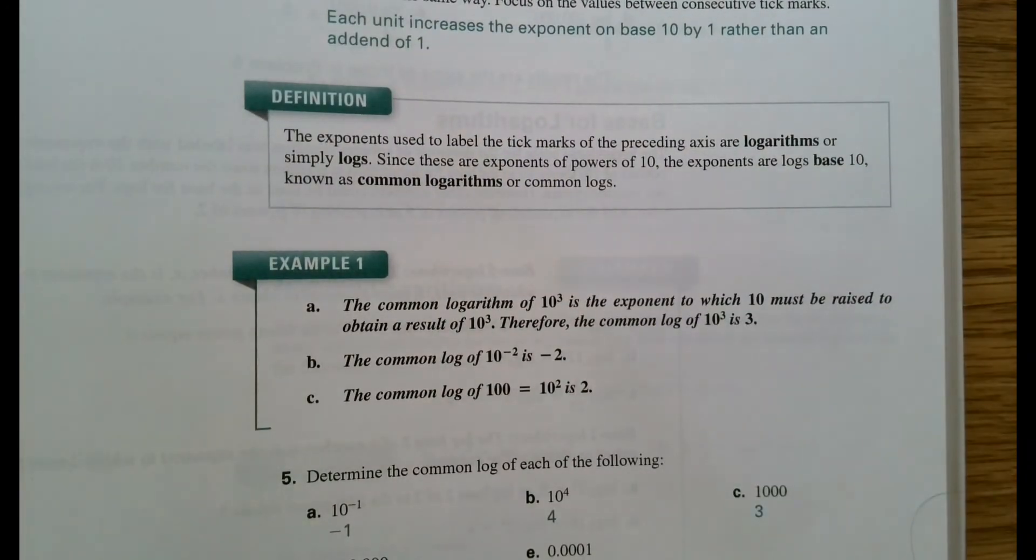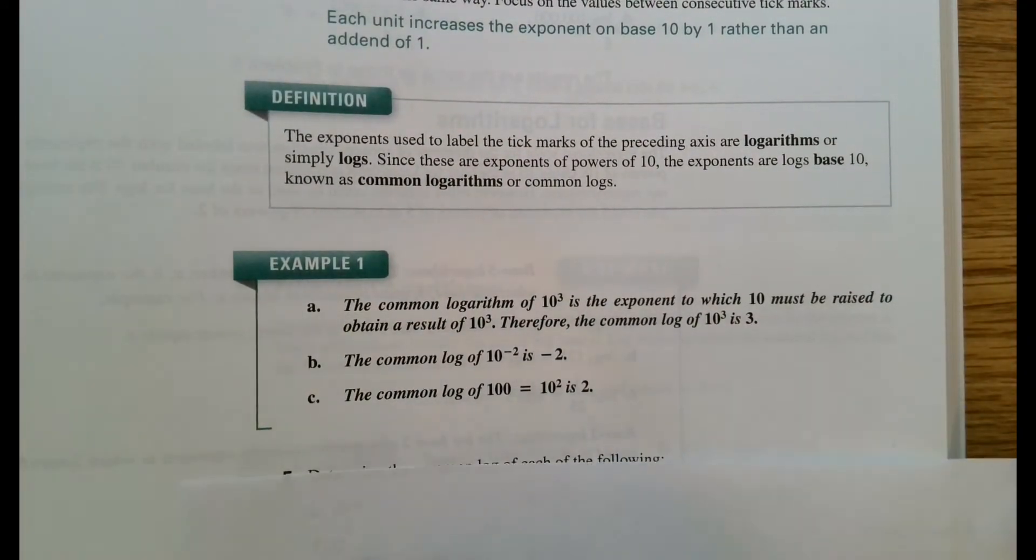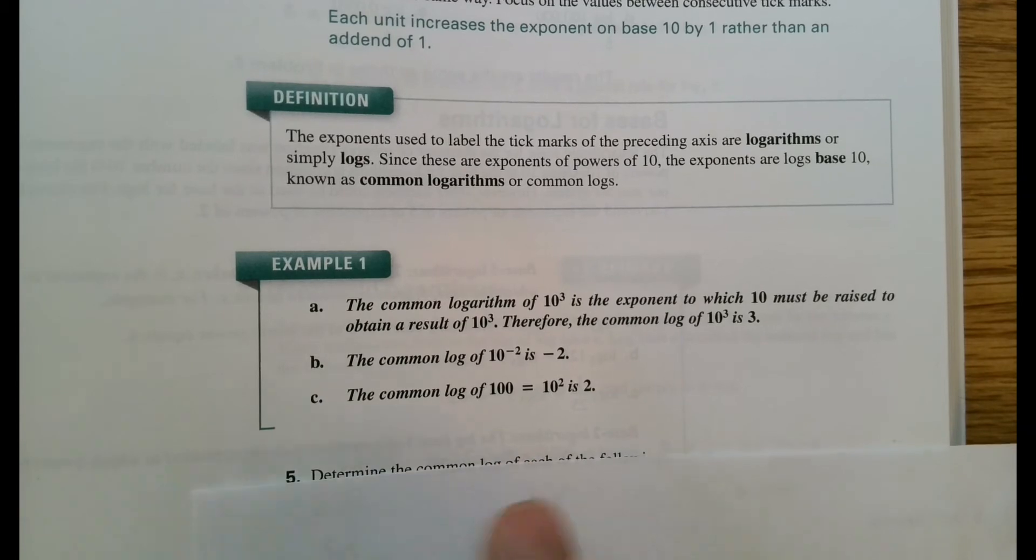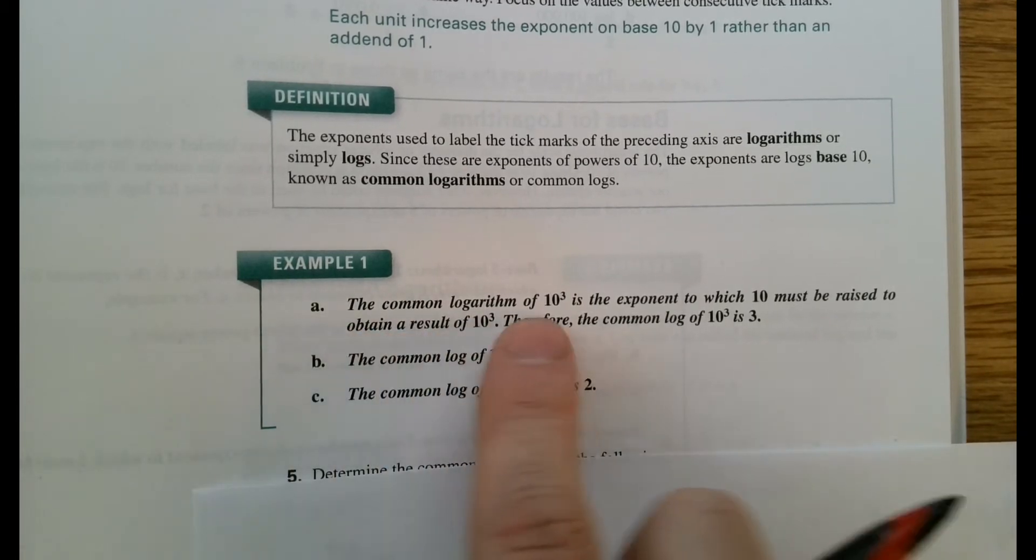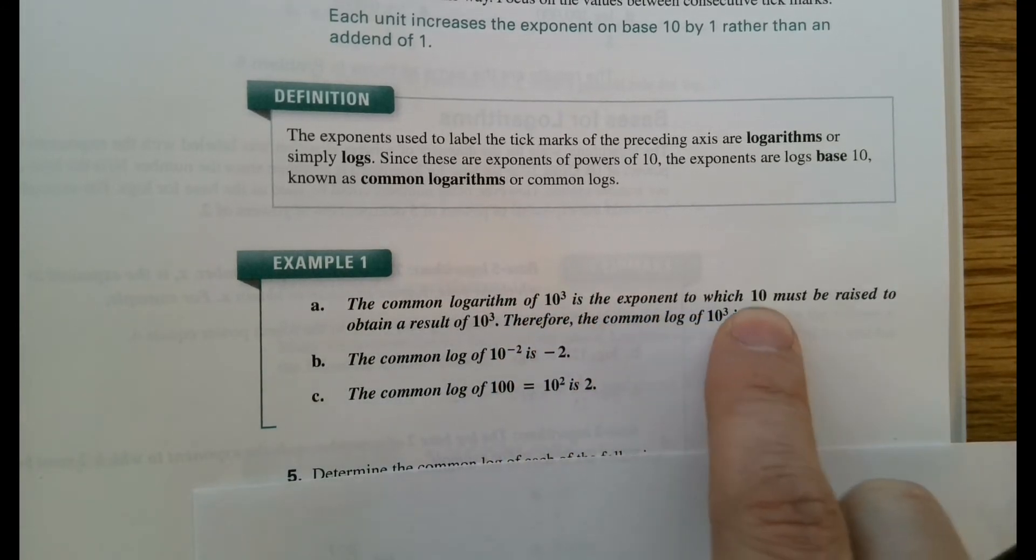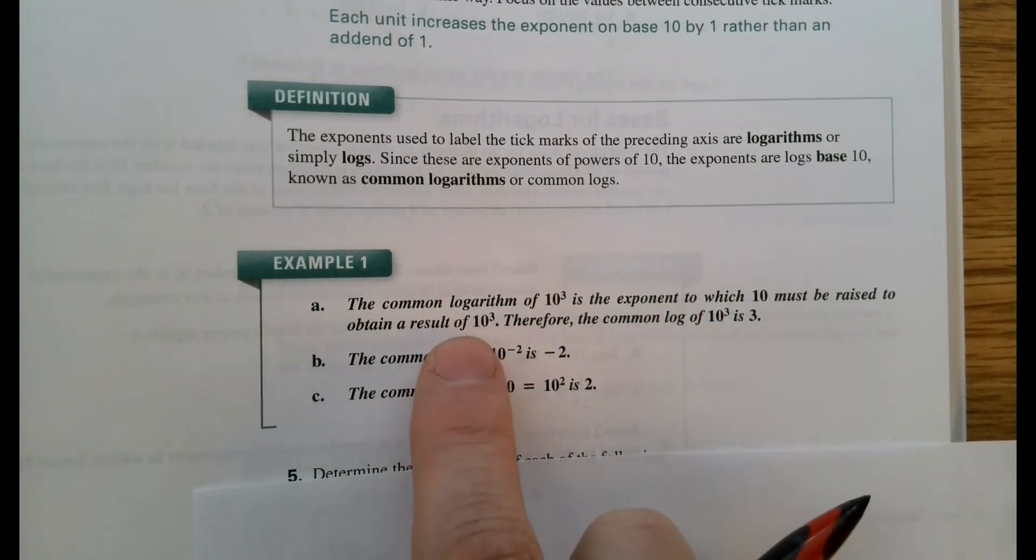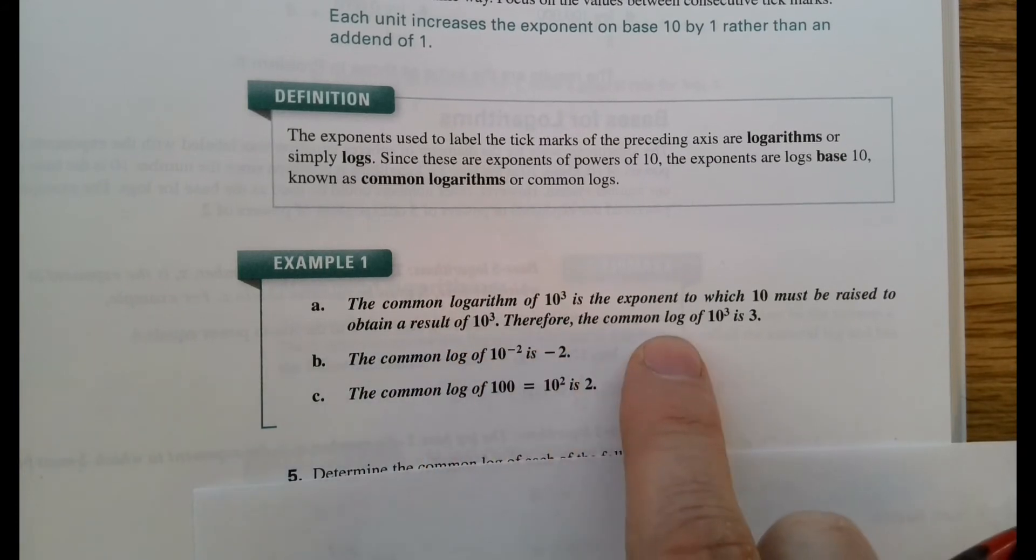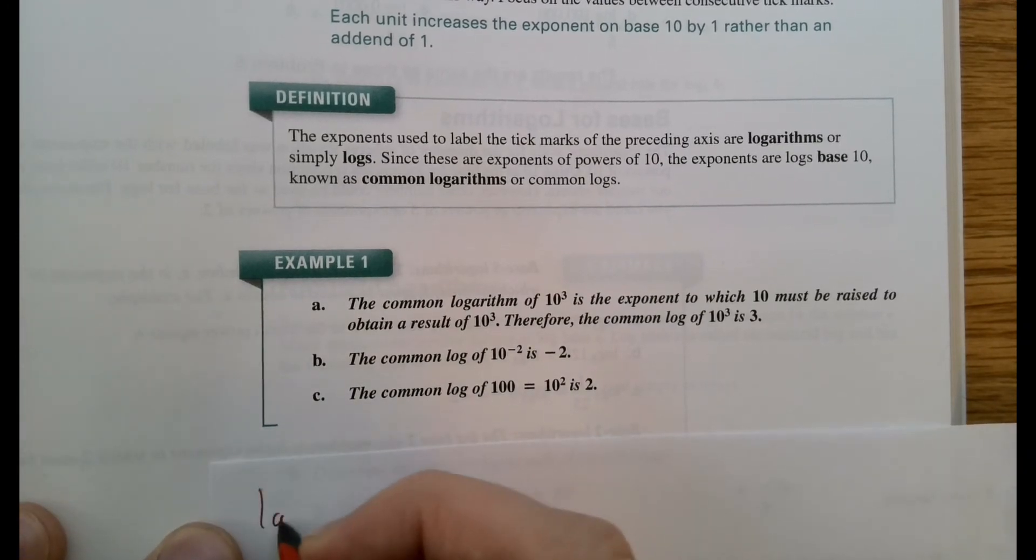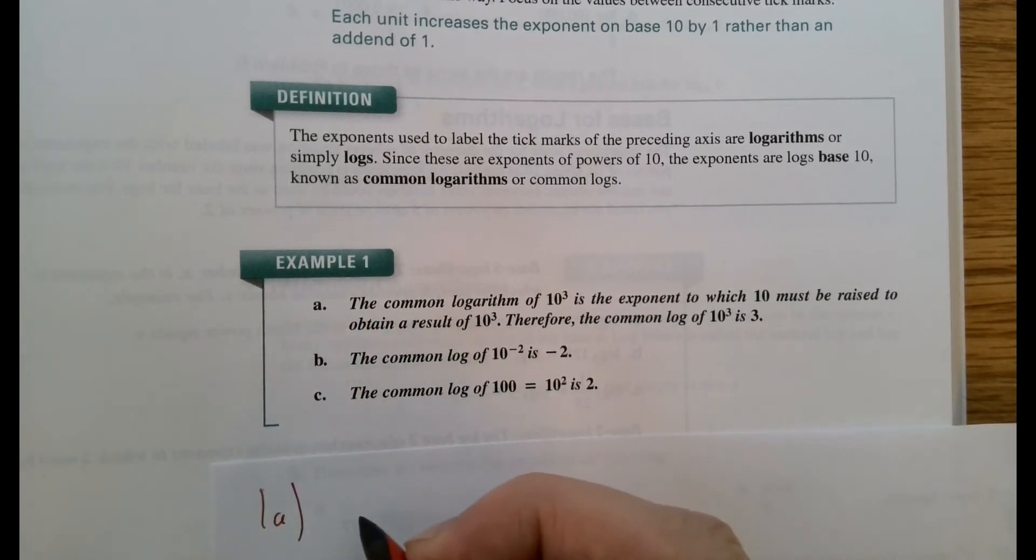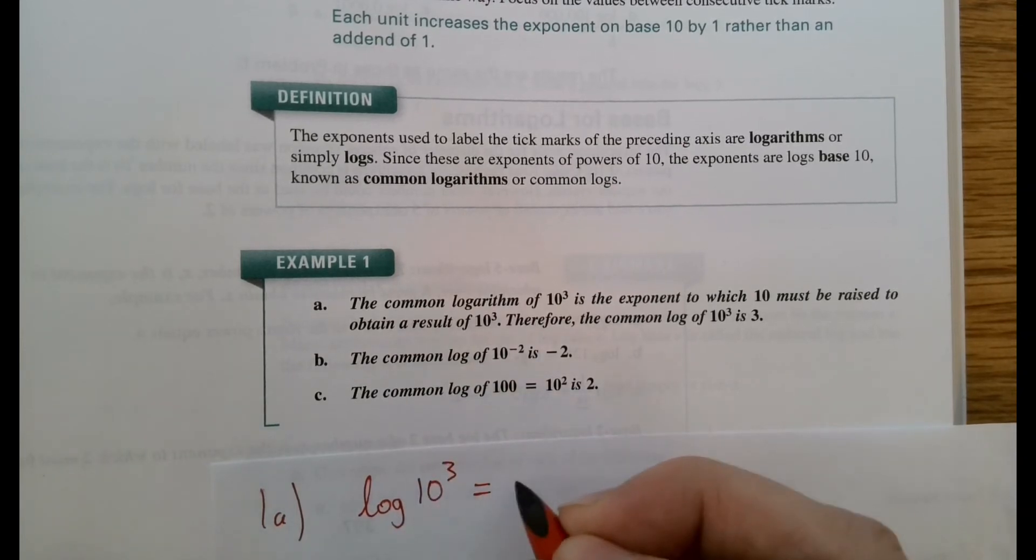So one of the things that we need to be careful with, this first example is a nice measurement of this, is understanding when we're talking about common logs. 10 to the 3 is the exponent to which 10 must be raised to obtain a result of 10 to the 3. So the common log of 10³ is 3. How do we write that? So 1a, it looks like this. Log 10³ equals 3.